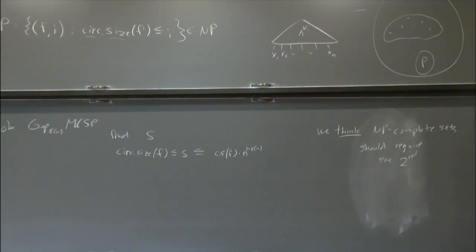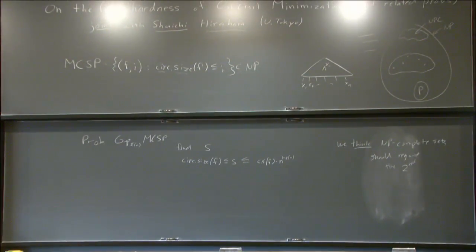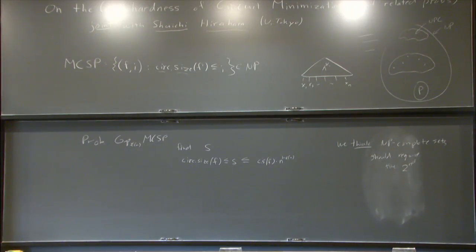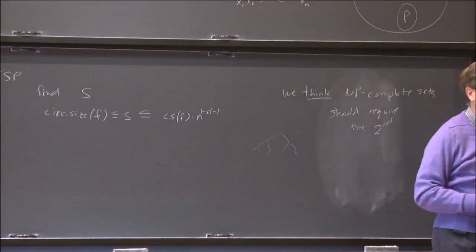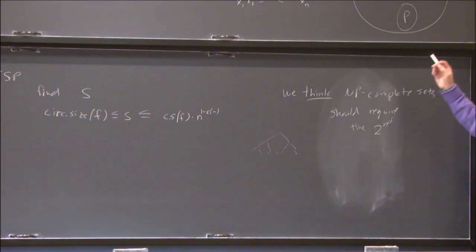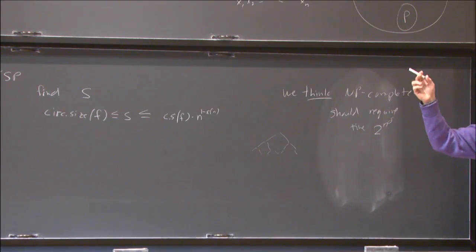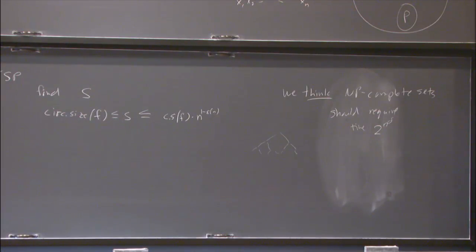Just to understand a bit: the MCSP problem — if you throw any little condition on the circuit construction, does it make coming up with an approximation a lot easier? For instance, assume that the circuit is a tree. Even if you look at formula size, which is basically the case where the circuit is a tree except you allow the inputs to be repeated at the bottom, we don't know much more — in fact, we know less about that problem than we do about the minimum circuit size problem.